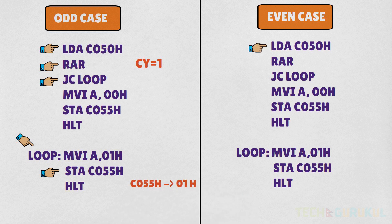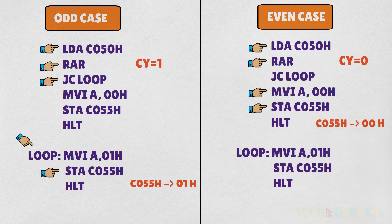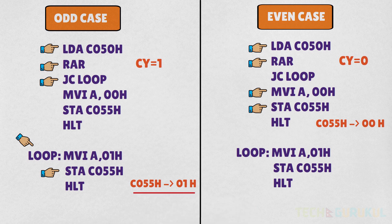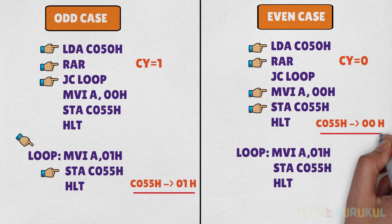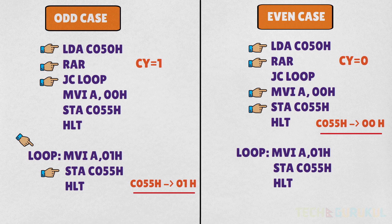Even number has last digit 0. We execute MVI A, 00H and STA C055H. So C055H will have 00H stored. For the odd case, C055H will have 01H stored. So to summarize: C055H contains 01H if it is an odd number, and C055H contains 00H if it is an even number.